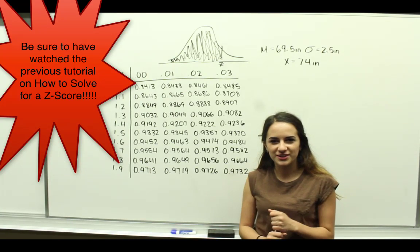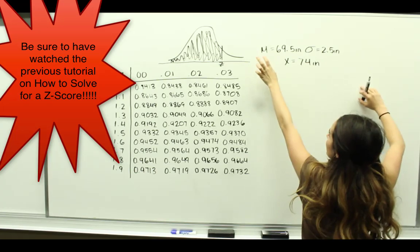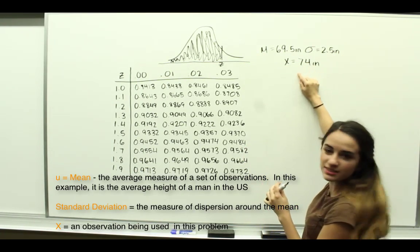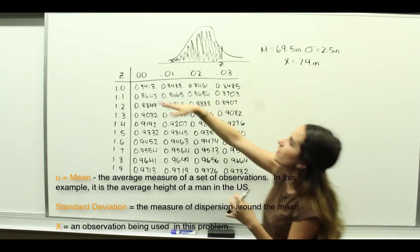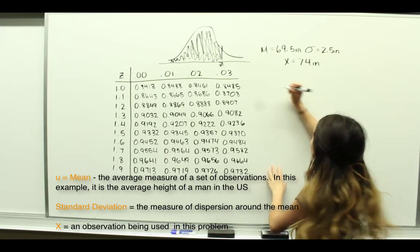This is a follow-up to a video we've done previously, so just to recap what we did: this is the height of men and we're trying to see where this person who's 74 inches falls within this distribution. Right now let's just solve for the Z-score again.